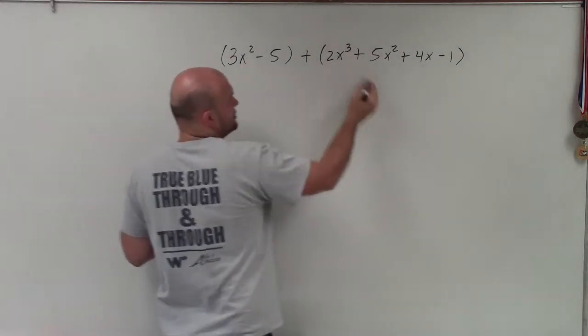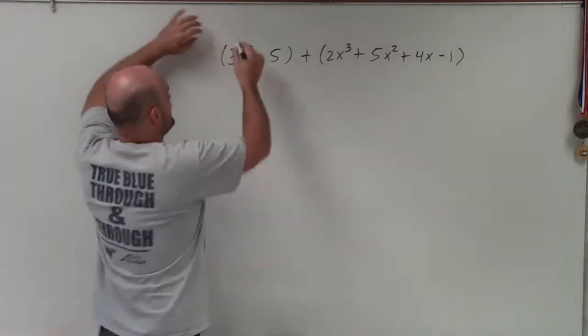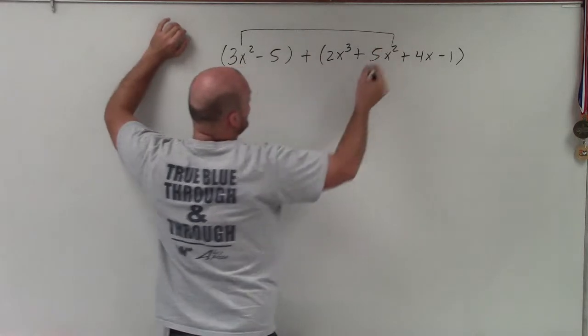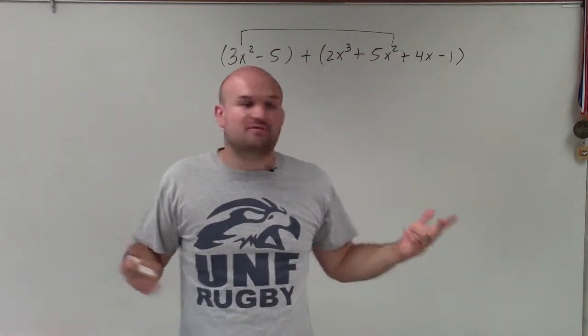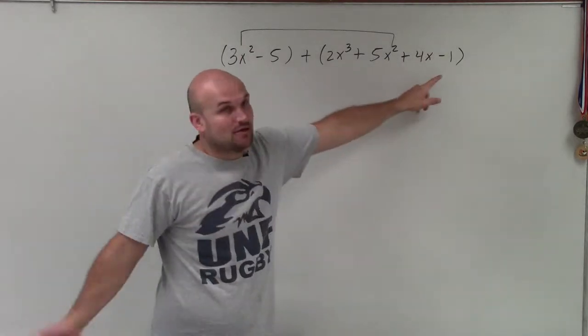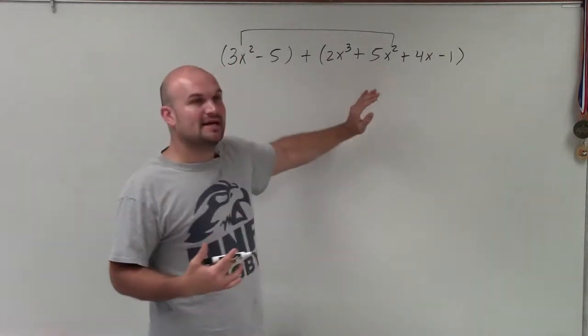So here we have x squared, x cubed, x squared, and x. Now, the same variable factors, x squared and x squared, those both have two x's, right? x times x are the variable factors, whereas x only has one x. So therefore, they don't have the same variable factors, so we can't combine them.